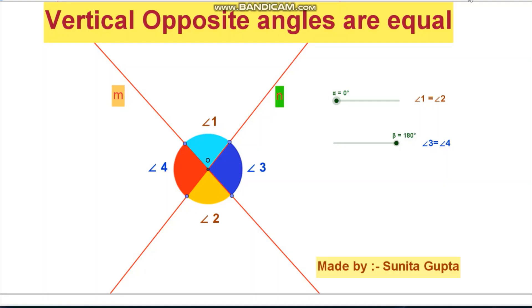Hello students. Today we will learn when two lines intersect at a point, the vertical opposite angles so formed are equal. Let us prove this using animation.